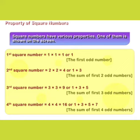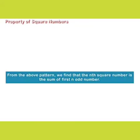Fourth square number = 4 × 4 = 16, or 1 + 3 + 5 + 7 (the sum of first four odd numbers). From the above pattern, we find that the nth square number is the sum of first n odd numbers.